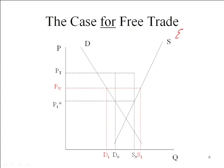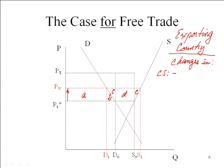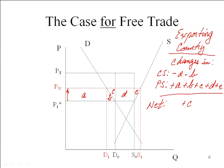We can also look at this from the exporting country's point of view. For the exporting country, the price is rising. Consumers are worse off by areas A and B because they have to pay a higher price, but producers are much better off by areas A, B, C, D, and E. There's no government revenue involved here. The net effect of getting rid of this tariff is an increase in C, D, and E — so clearly the exporting country would be much better off. This gives us the sense that getting rid of a tariff actually would increase economic welfare in both the importing and the exporting country. This is always true for a small country and will also be true for a large country as long as the terms of trade effect are not too great.